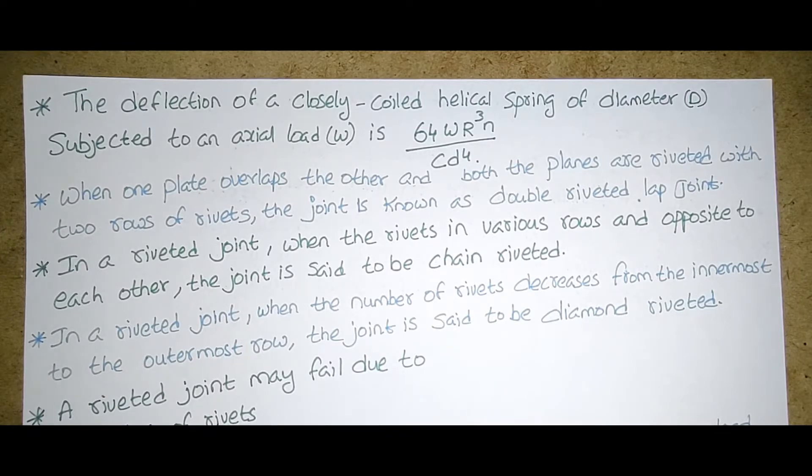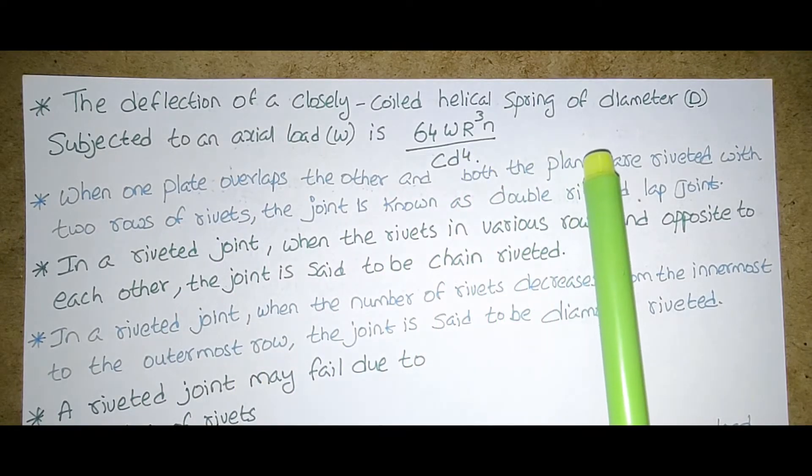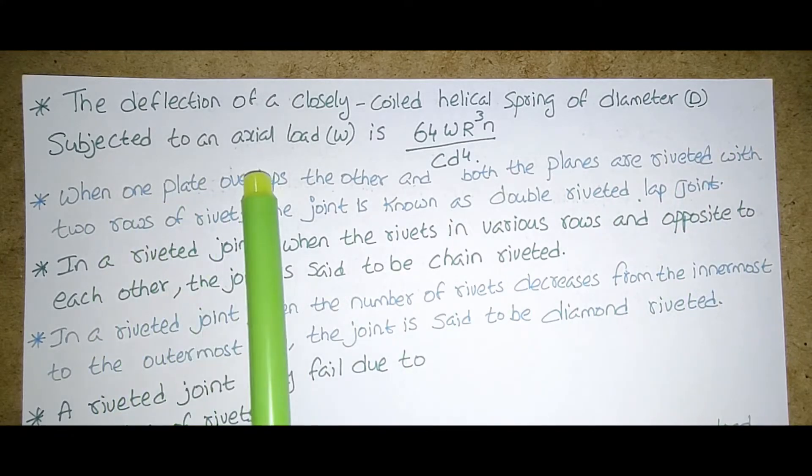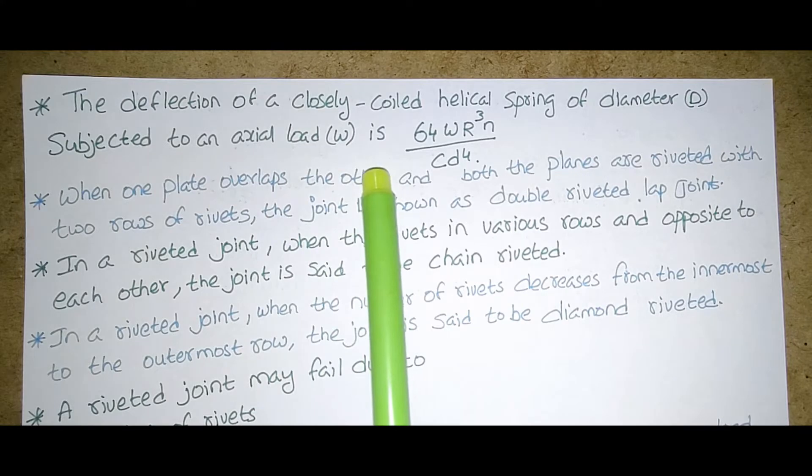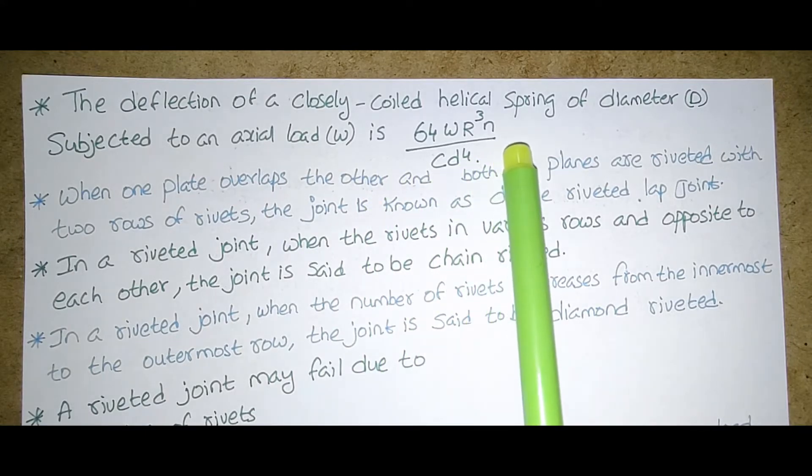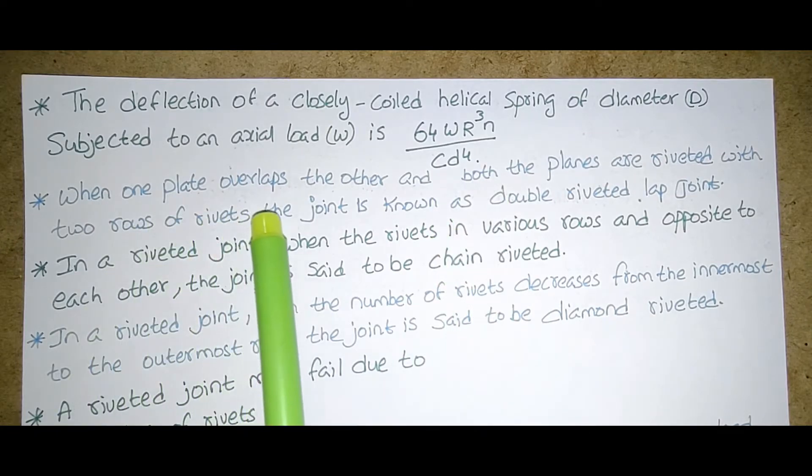Now we will start discussing these topics. The deflection of a closely coiled helical spring of diameter D subjected to an axial load W is 64 WR cube N by CD to the power 4.